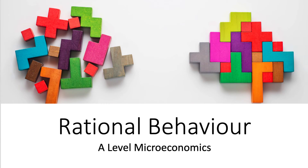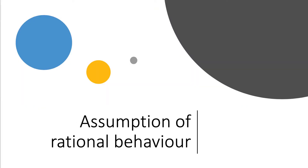In this video we're going to take a quick look at the concept of rational behavior. Rational behavior refers to a decision-making process that's based on people making choices that result in the optimal level of benefit or the maximum level of utility for an individual.